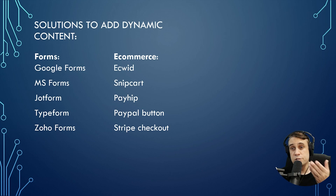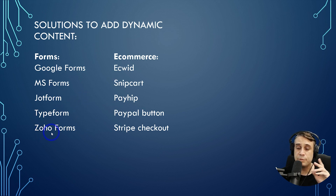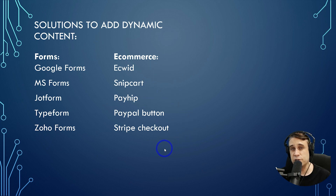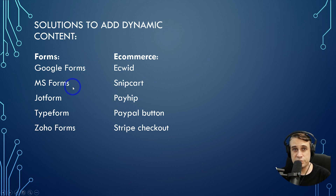A few options for adding dynamic content to a static site: for forms, you can use Google Forms, Microsoft Forms, Jotform, Typeform, Zoho Forms, or Formspree. For e-commerce, options include Ecwid, Snipcart, Payhip, PayPal buttons, and Stripe Checkout — all embeddable to give e-commerce functionality. There are probably many other options too; these are just examples off the top of my head.